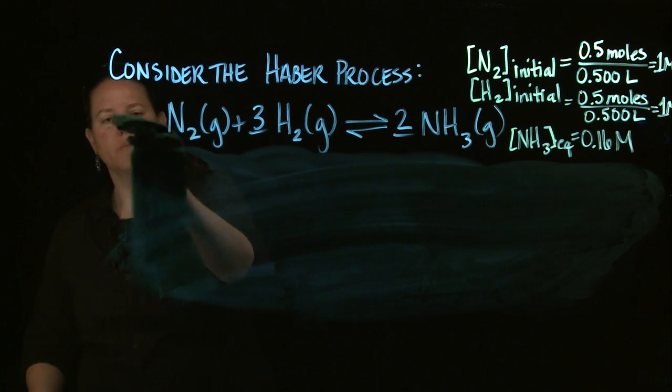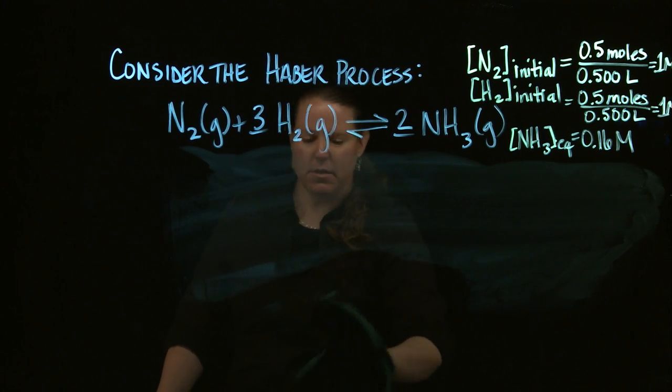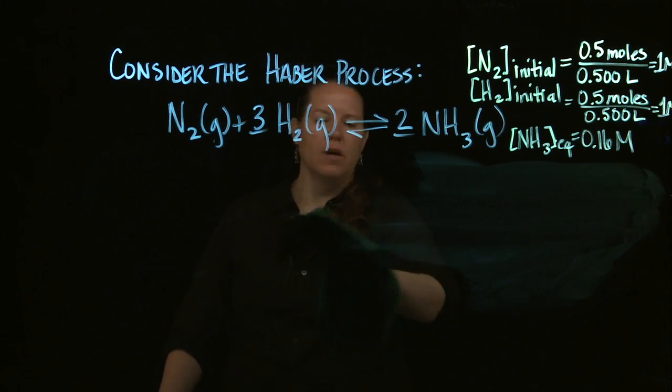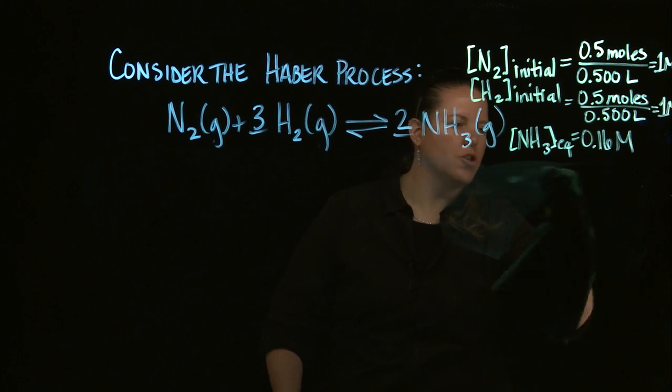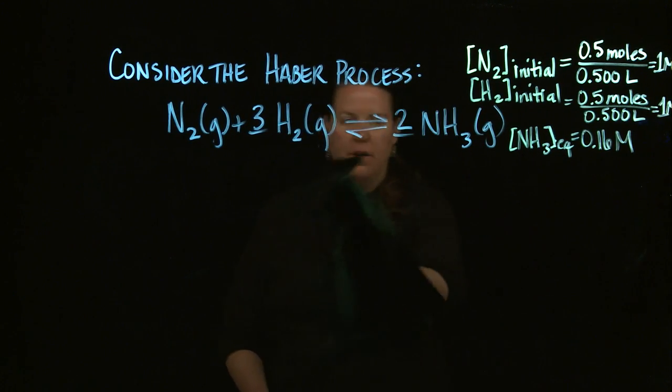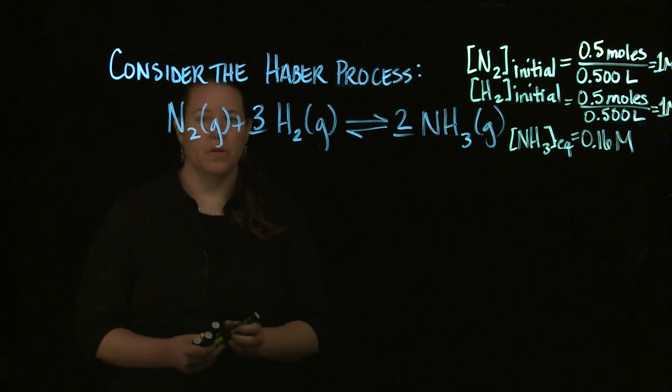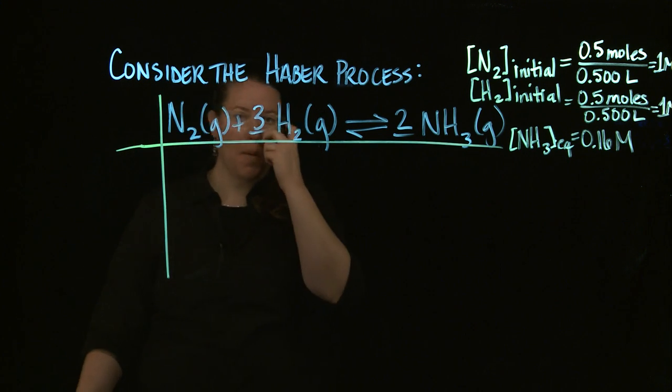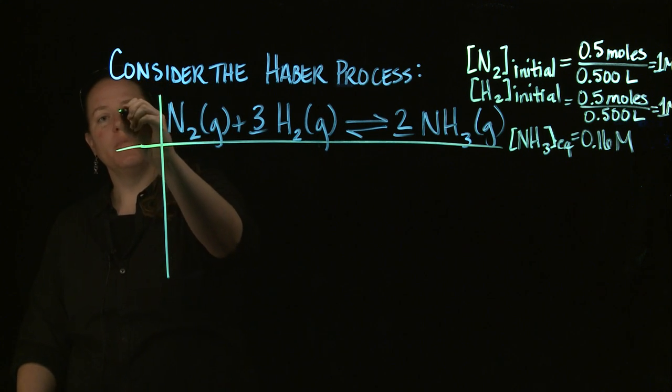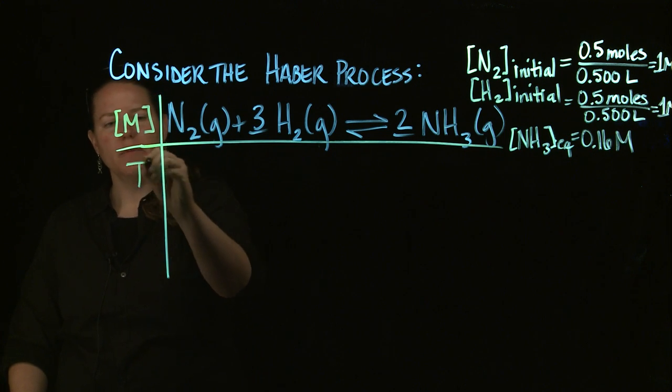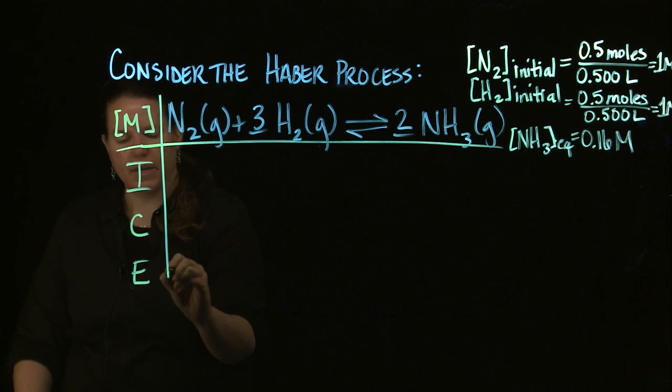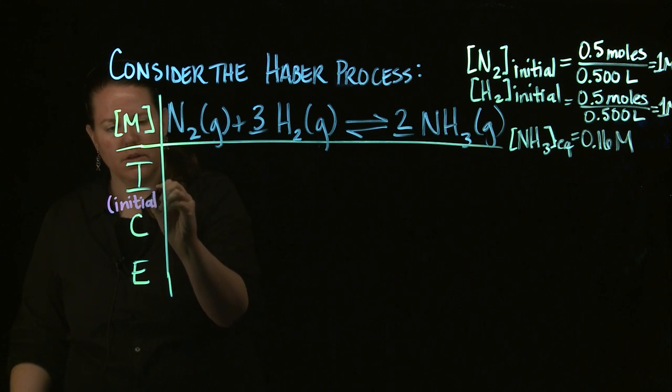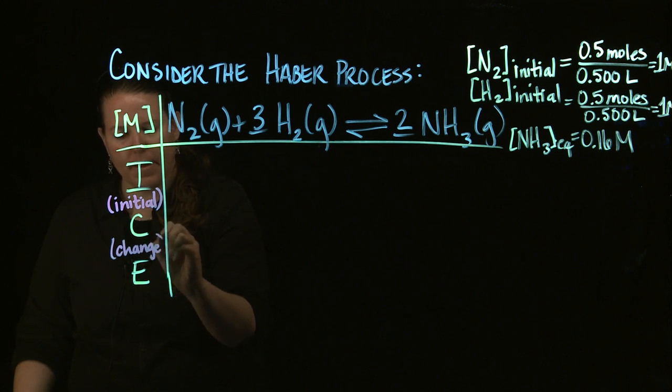In terms of the ICE table, the process we're going to do here, what ICE means is it's an acronym. It's really a way to track the changes in the reactions. So ICE stands for initial, change, and equilibrium. What we're going to do is we are going to put the reaction at the top of this. We have to keep track of the reaction at all times, and we're going to put maybe that this is in concentration values in molarity, and then I'm going to write ICE down the sides. Remembering that this stands for initial, change, and equilibrium.